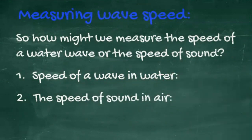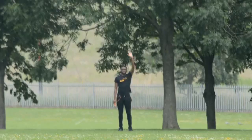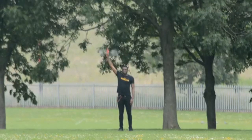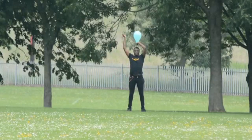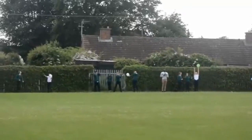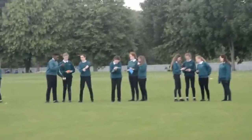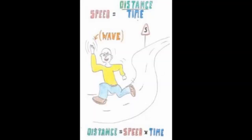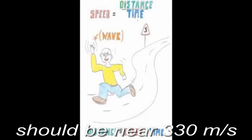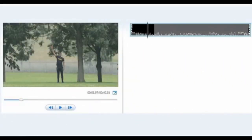To measure the speed of sound in air, start with a single loud noise — for example, a firing pistol or popping a balloon — set up as far away as possible. In this instance, the balloon was 150 metres away from the observers, with the distance measured by tape measure or trundle wheel. The observers record the time difference between seeing and hearing. With a distance of 150 metres and an average time of 0.4 seconds, the overall speed was found to be 375 metres per second. Using a video recorder is one way to reduce human error in measuring time.